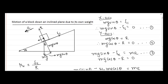So here we have looked at a block which is sliding down due to its own weight. In the next video we will study this phenomenon further and look at what happens when a block is not sliding down due to its own weight but a force is being applied to make it move down an inclined plane, and also when a force is applied to move it up the inclined plane. We will discuss these two cases in the coming videos. Thank you.